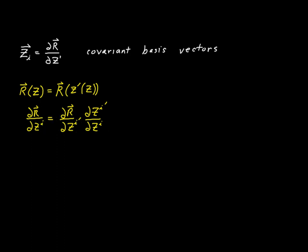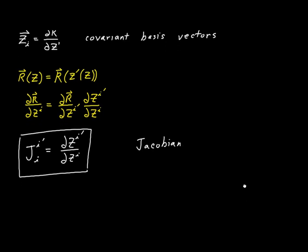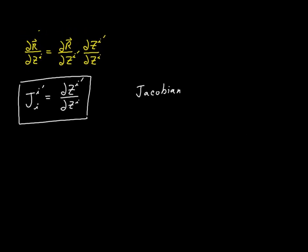We're going to say that the partial derivative of zi prime with respect to zi is going to be defined with the letter J. And because it's got an upper index and a lower index, we need an upper index and a lower index — so we're dealing with two free indexes this time. This is a definition, and we'll call it the Jacobian. The official name is the Jacobian of the coordinate transformation, but everybody just calls it the Jacobian. And now we can rewrite our expression: the covariant basis vector in the z system equals the Jacobian J^{i'}_{i} times the covariant basis vector as defined in the z prime system.